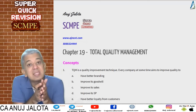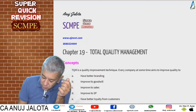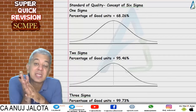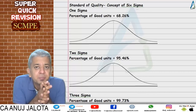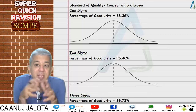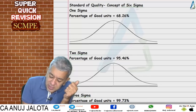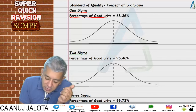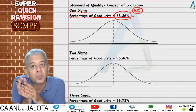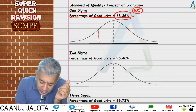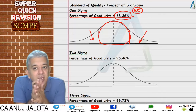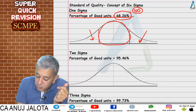This chapter starts with the standards of quality. We have one sigma, two sigma, three, four, five, and six sigma — six sigma being the highest standard. At one sigma, if you produce 100 units, only 68.26% are good units. If you divide 68.26 by 2 and draw a normal distribution curve, that area represents good units; the rest are defective. So the percentage of good units at one sigma is 68.26%.